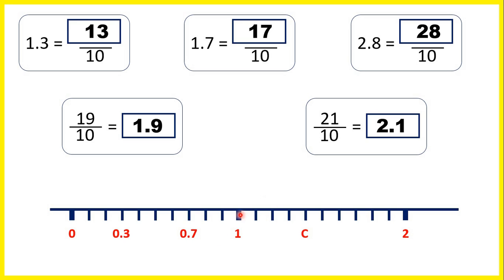And then C comes after 1, and it's 1, 2, 3, 4 lines after 1. So that's 1 and 4 tenths, or 1.4.